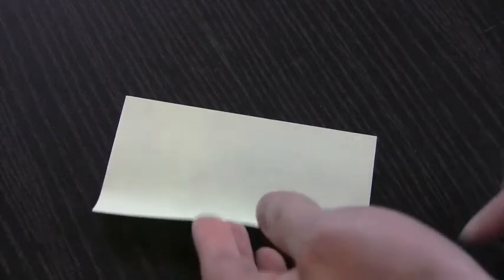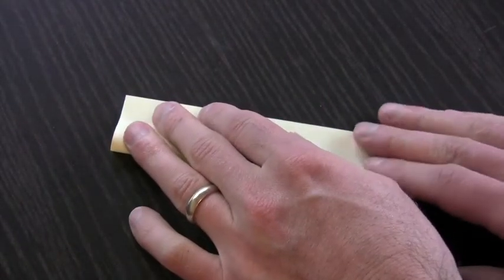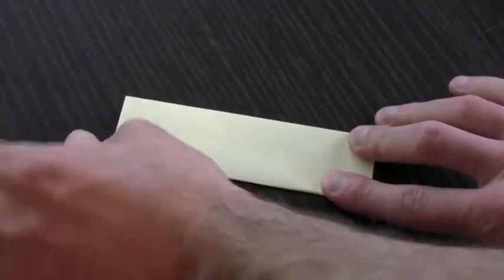Start by sticking the note to the table, sticky side down, then fold the note in half the long way. Get a nice clean crease.